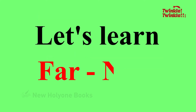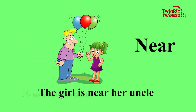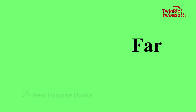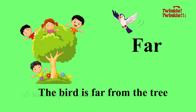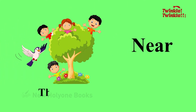Let's learn Far and Near. Near — the girl is near her uncle. Far — the girl is far from her uncle. Far — the bird is far from the tree. Near — the bird is near the tree.